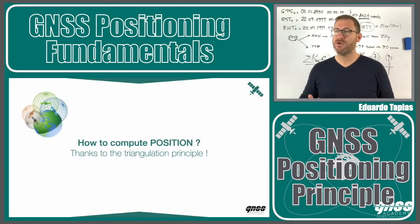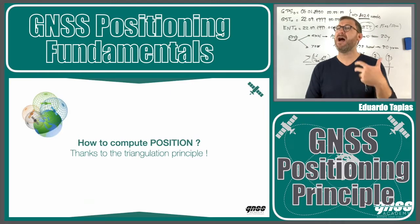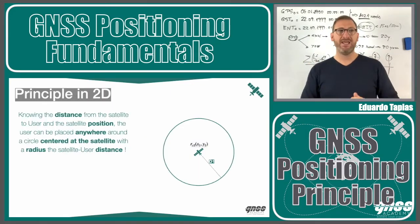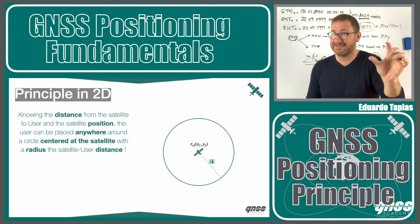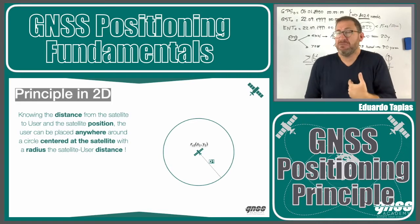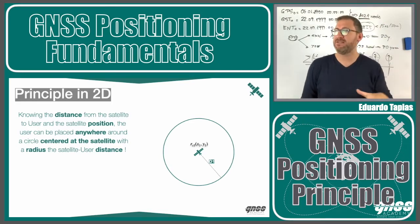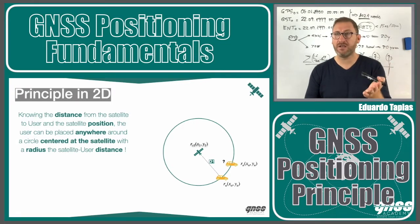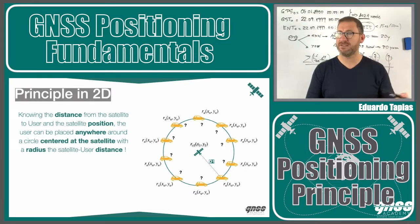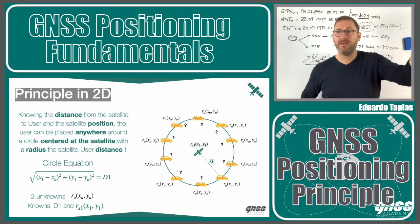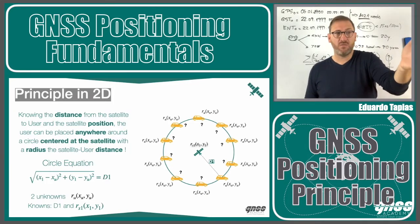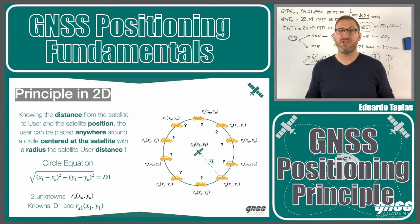Now let's look at how we compute the position of a receiver on Earth, starting with the 2D case. If I know the position of a satellite and I know the distance to it, I know I will be somewhere on a circle of that distance. I could be anywhere on that circle — I have many unknowns. The constraint is the circle, and the equation is: (x − x_satellite)² + (y − y_satellite)² = distance². That is the equation of a circle.